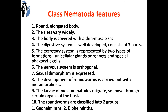The larvae of most nematodes migrate — they move through certain organs of the host. Depending on the features of the development cycle, roundworms are classified into two groups: 1 — geo-helminths, and 2 — bio-helminths.